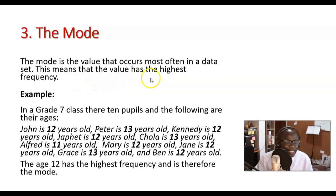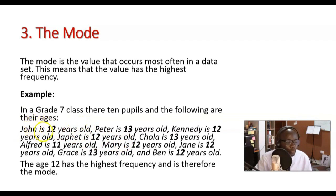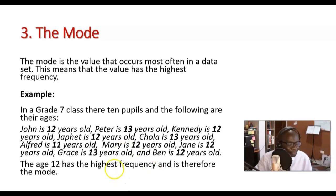To find the mode, look at the value that keeps occurring — the one which keeps appearing. Looking at the ages list, you'll notice that 12 appears a lot of times, meaning 12 has the highest frequency, and so 12 is the mode.